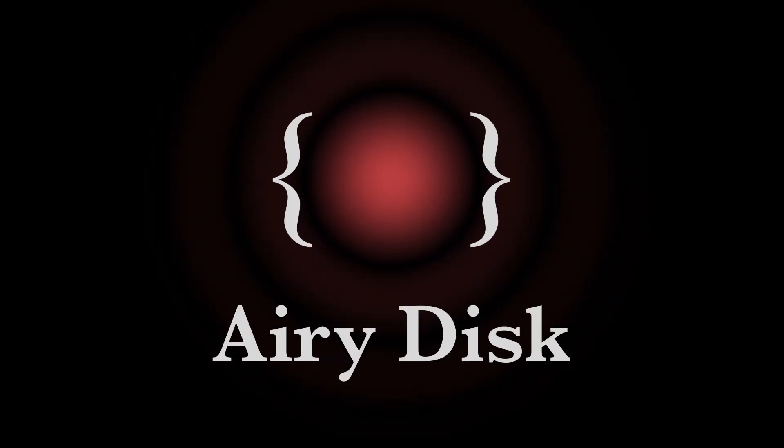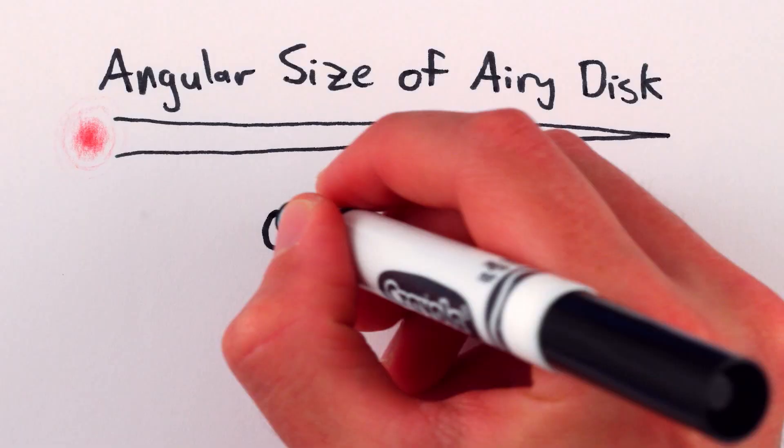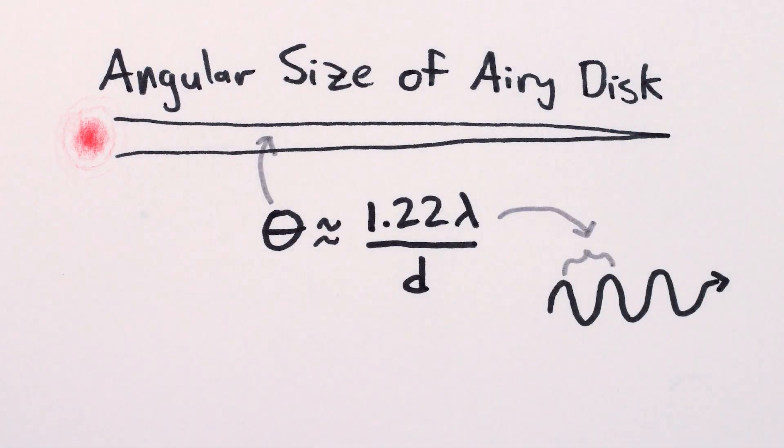The blur that a small point of light spreads out to become is called an airy disk, and the size of the airy disk for distant, tiny objects depends only on the wavelength of the light in question and the size of the opening you're looking through.